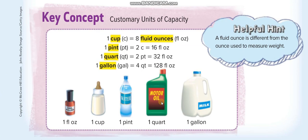For this lesson you have to memorize this table. A fluid ounce is like a small bottle of nail polish. A cup is like a baby filter. One pint is like a small water bottle. One quart is like a small bottle of motor oil. And one gallon is like a gallon of milk.